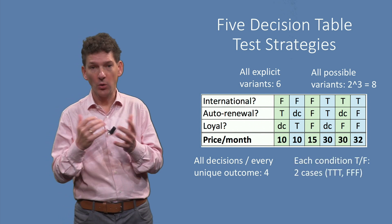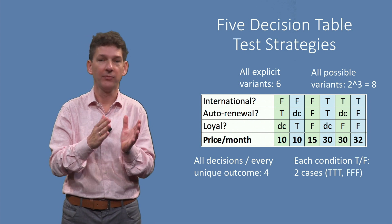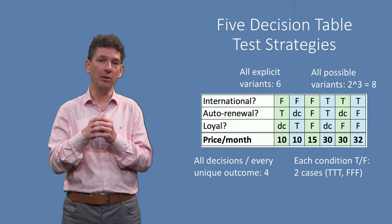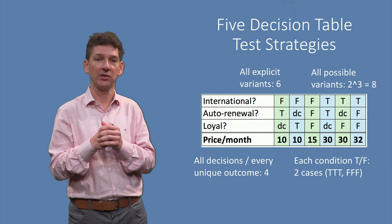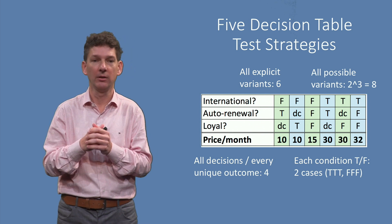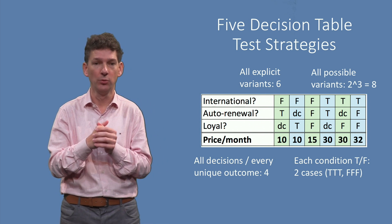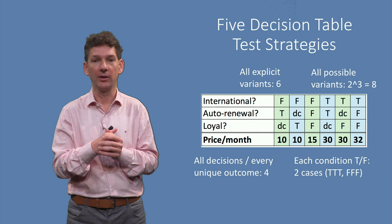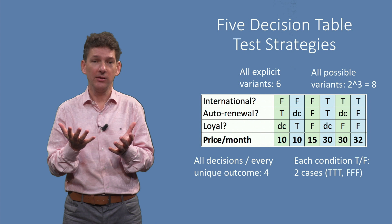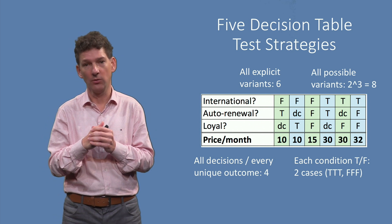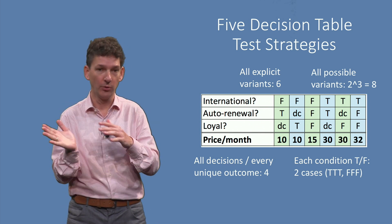Alternatively, the all conditions strategy simply insists that every condition yields both true and false. While this may seem demanding, often this strategy can be achieved with just 2 test cases. In our example, it can be done with just 2 test cases — for example, one in which all conditions evaluate to true, and another in which they all evaluate to false as input. This clearly also yields fewer test cases than the all explicit strategy, yet ensures that each condition is tested both ways.